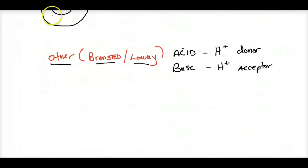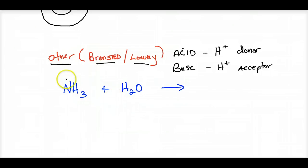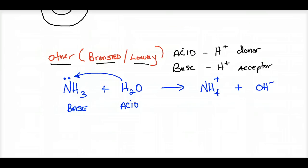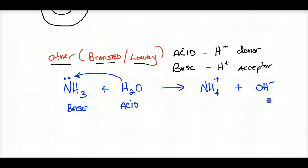NH₃ is listed as a base. When dropped in water, the lone pair on nitrogen accepts and pulls an H off of water. Water donates the H, acting as an acid, and NH₃ accepts it, acting as a base. This produces the ammonium ion NH₄⁺ and leaves behind a hydroxide. So ammonia indirectly produces hydroxide ions even though it doesn't contain one.